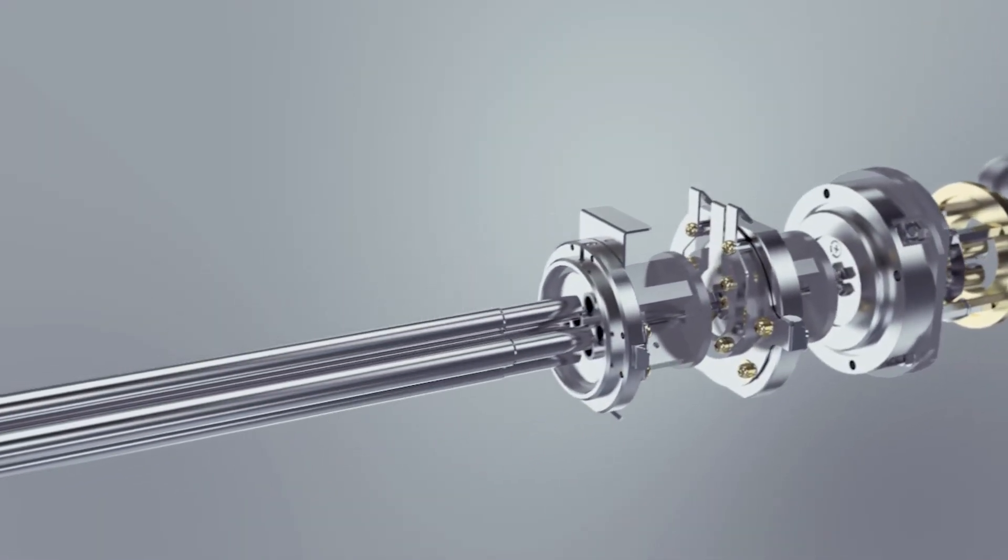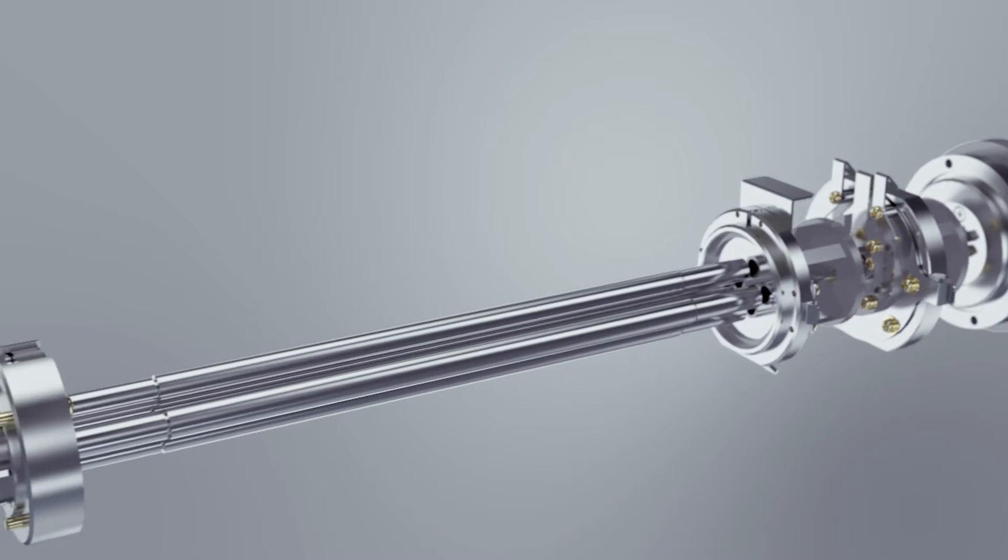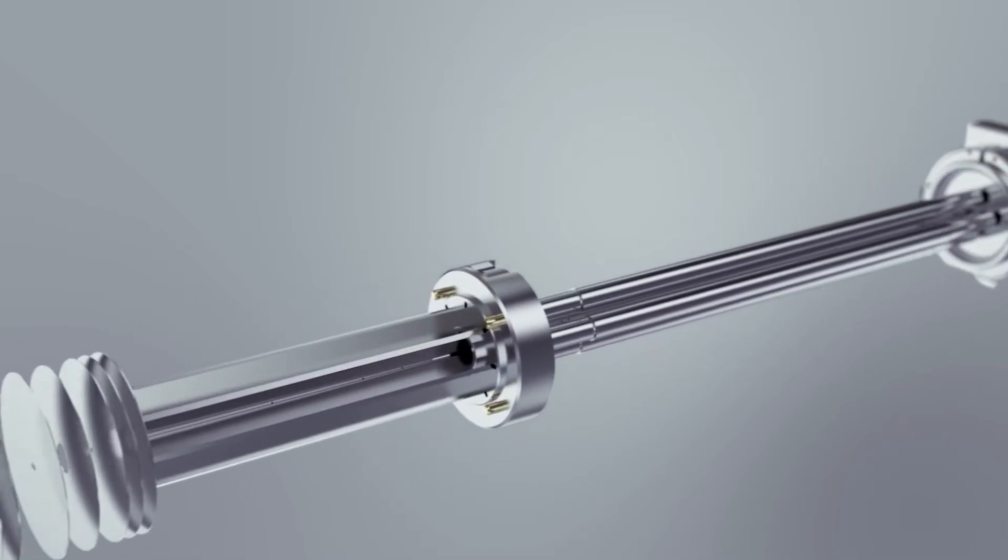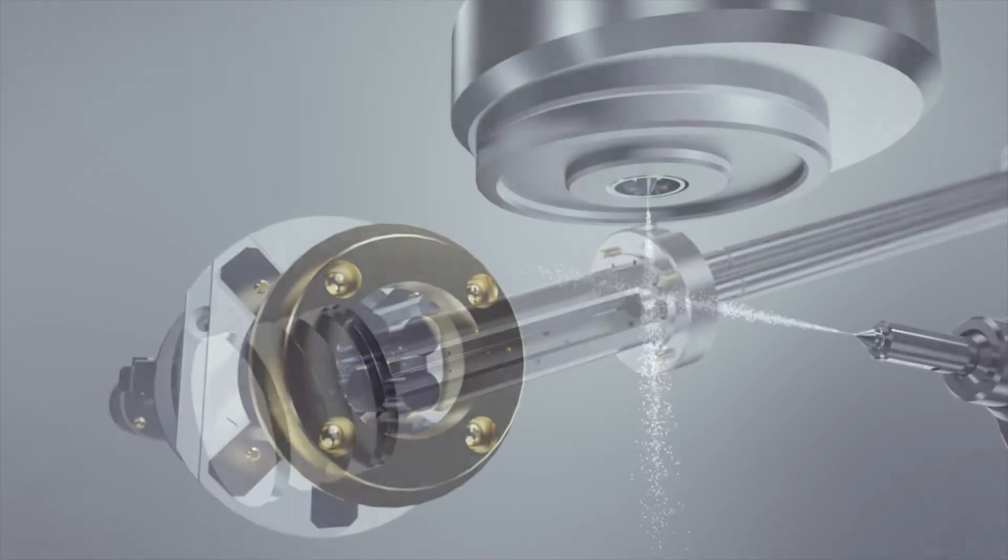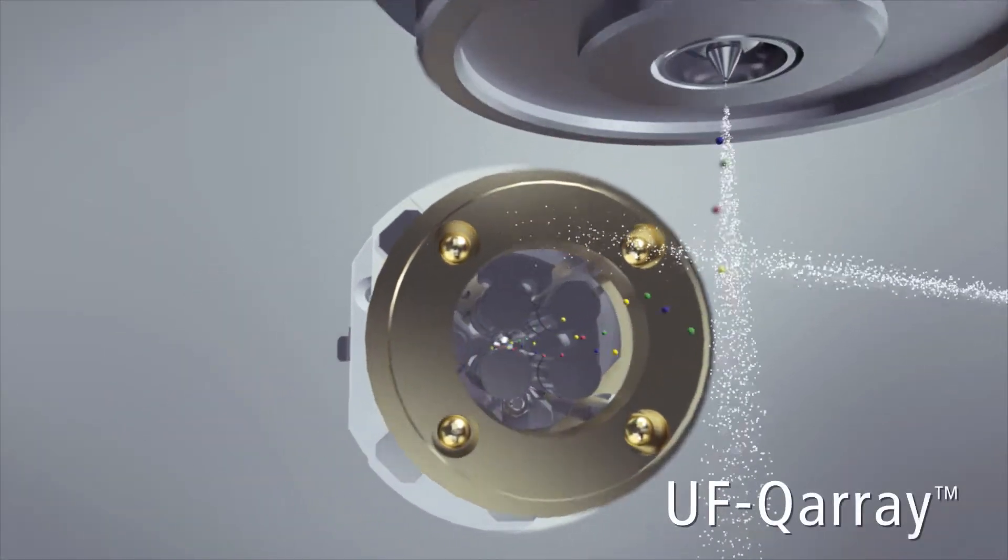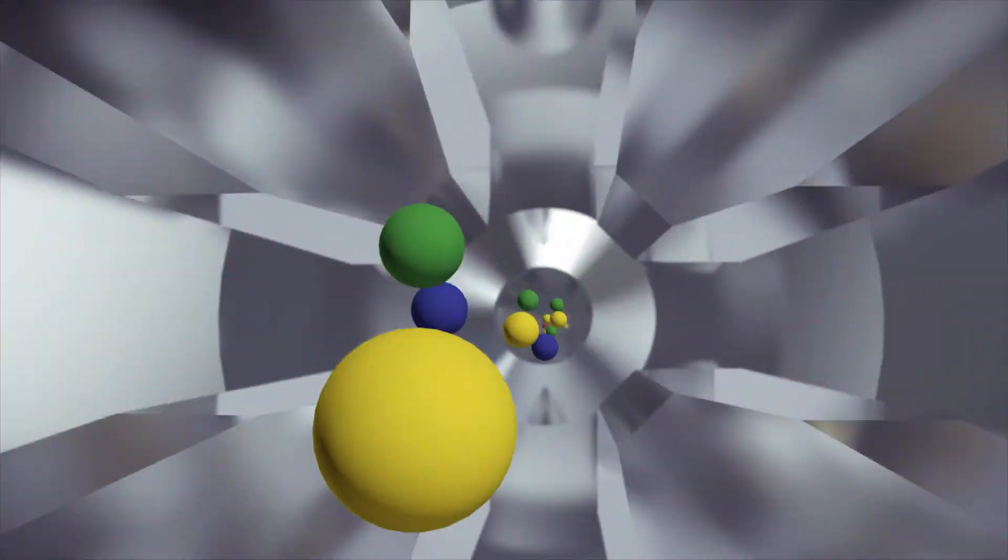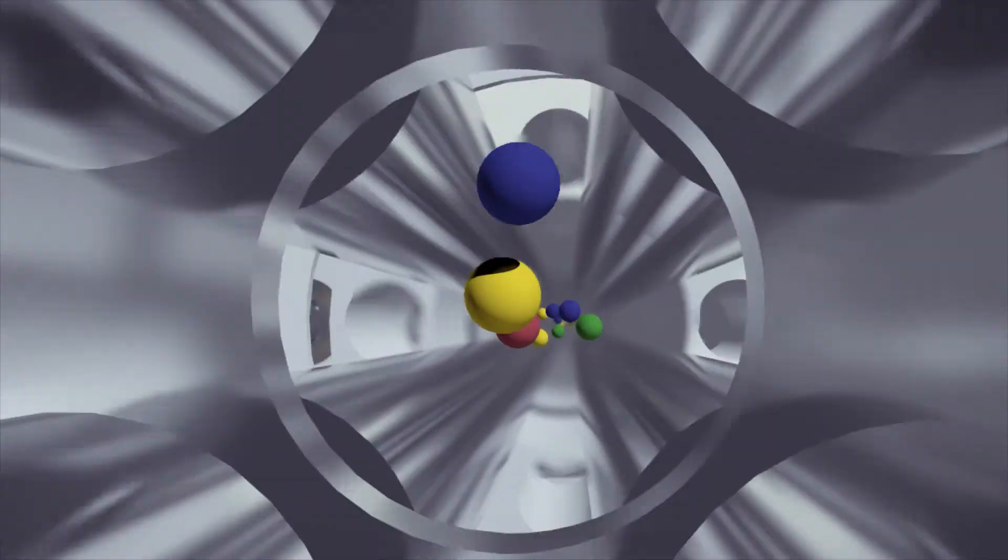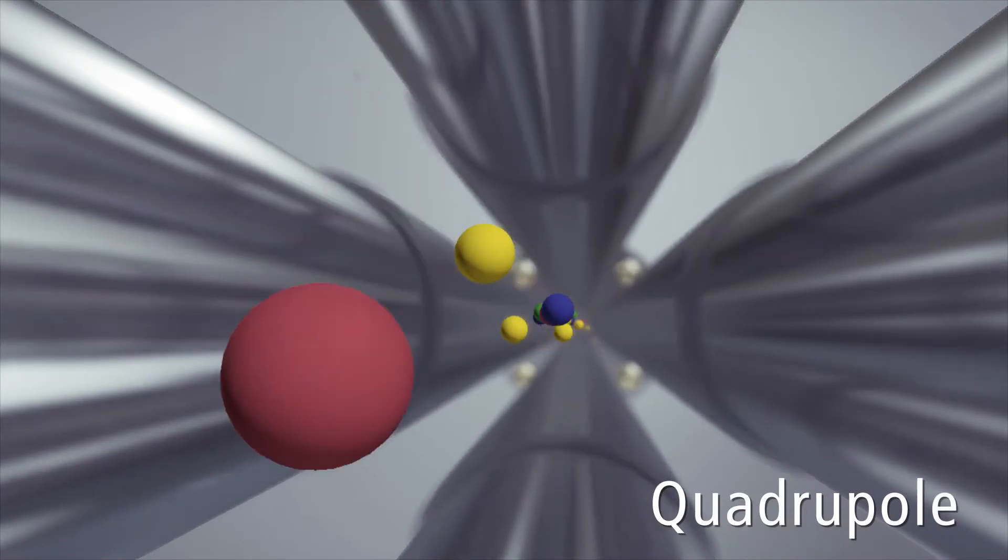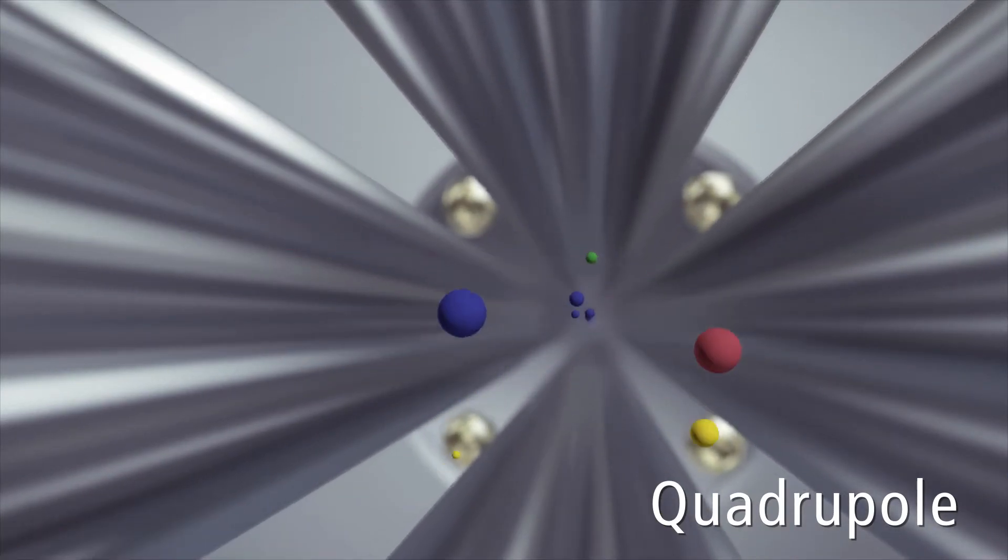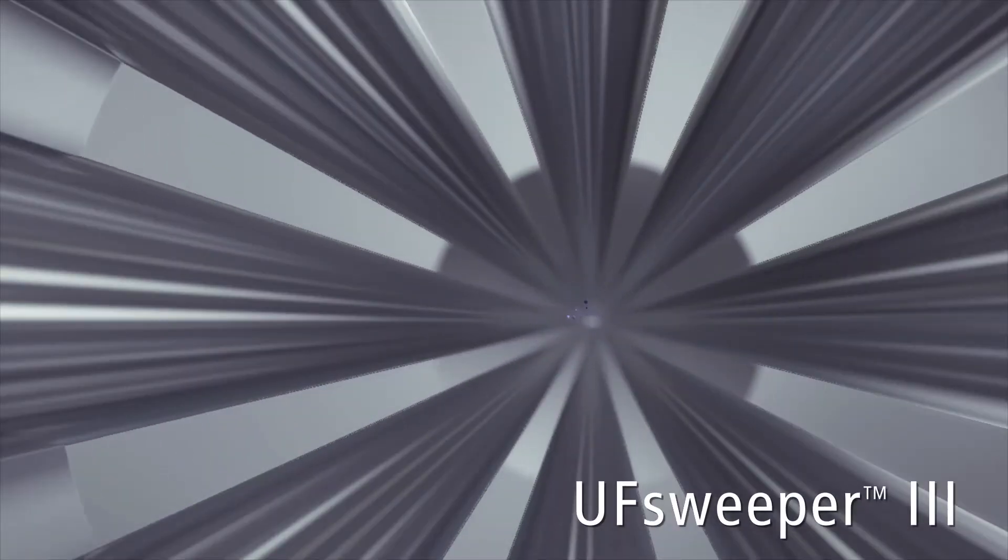The LC-MS 9030 builds on Shimazu's key technologies used in the world's fastest and highest sensitivity triple quadrupole mass spectrometer: the UF-Q array, true hyperbolic quadrupoles, and the UF sweeper 3.